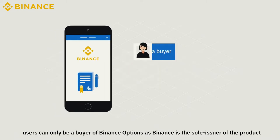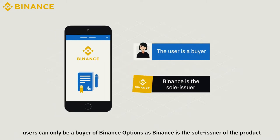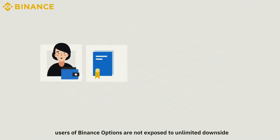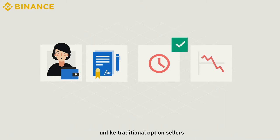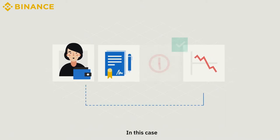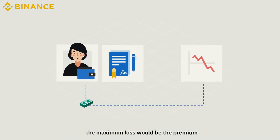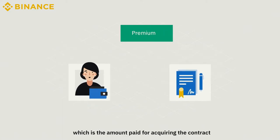Unlike traditional options, users can only be a buyer of Binance Options as Binance is the sole issuer of the product. Therefore, users of Binance Options are not exposed to unlimited downside, unlike traditional option sellers. In this case, the maximum loss would be the premium, which is the amount paid for acquiring the contract.